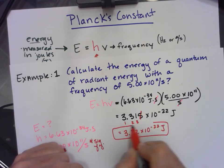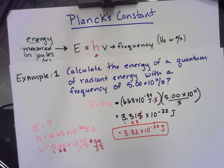So if a wave has a frequency of 5.00 times 10 to the 11 cycles per second or hertz, each quantum of energy in that wave is going to have 3.32 times 10 to the negative 22 joules of energy.